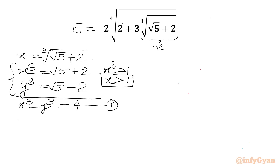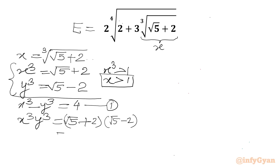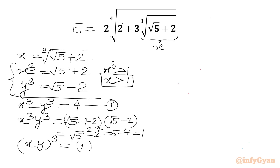And if I multiply these two, x cube times y cube will be square root 5 plus 2 times square root 5 minus 2. We can apply the difference of two squares formula, so we get square root 5 whole square minus 2 whole square, which gives us 5 minus 4, so the value is 1. I can write the LHS as (xy) cubed and RHS 1 as 1 cubed. After taking cube root both sides, we get xy equal to 1 for real x and y. I will call this equation number 2.